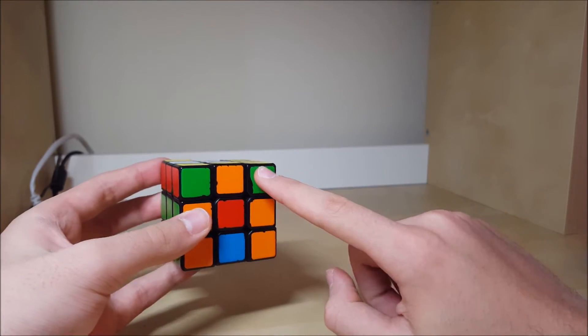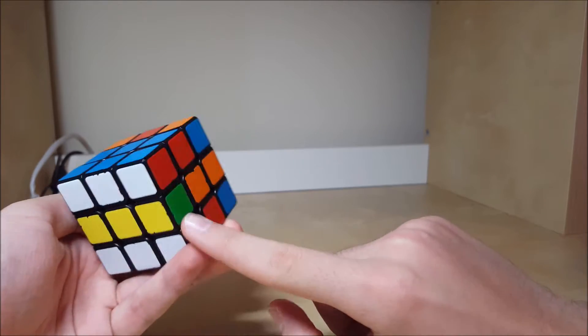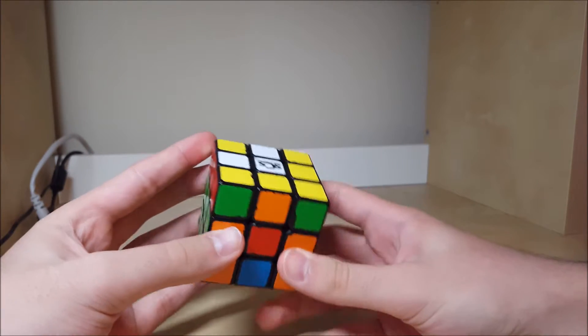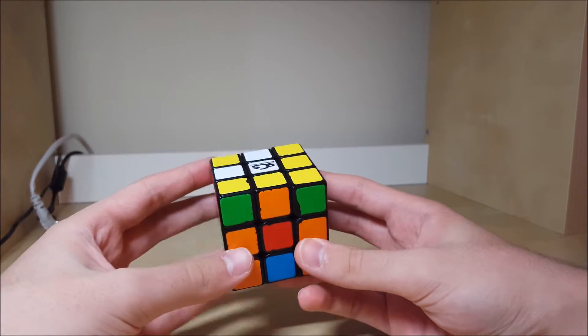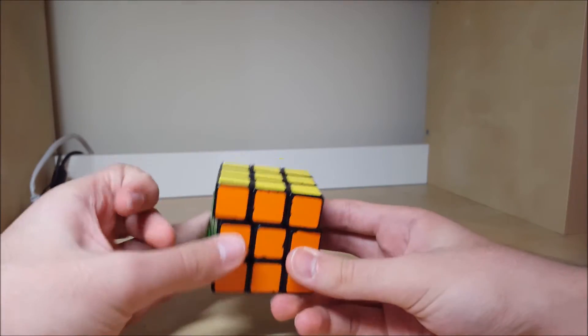Right before you insert your left and right edges, they'll be on the bottom, and you have to do an M2 to get them solved. From this position right here, you can actually one-look the rest of the solve, so you can just turn as fast as you can and then you'll be done.